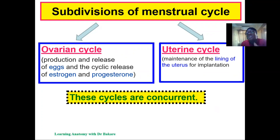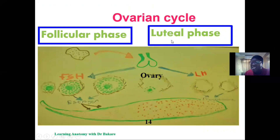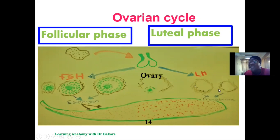The ovarian cycle can be further subdivided into two phases: the follicular phase and the luteal phase. The follicular phase entails the time frame where folliculogenesis occurs. After this phase, when a mature follicle is present, ovulation occurs. After ovulation, the corpus luteum progressively develops and is involved in producing hormones that affect the uterus.